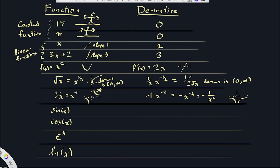Now sine of x — that was maybe the most difficult derivative we computed. You don't need to remember why it's true; it's a difficult proof. But it's good to know that the derivative of sine of x is cosine of x. Kind of miraculously.